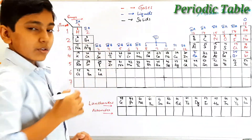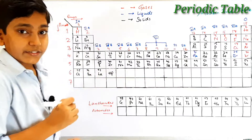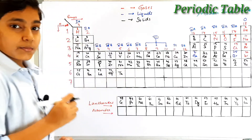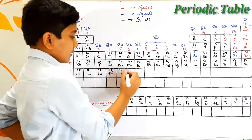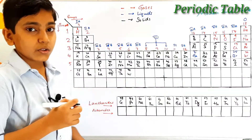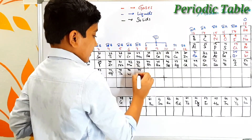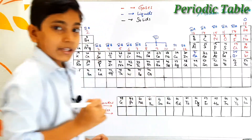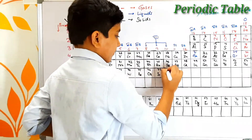Continuing in the sixth period after lutetium, we find hafnium — its symbol is Hf and its atomic number is 72. After that we find tantalum with atomic number 73, then tungsten with atomic number 74 — its symbol is W, which stands for wolfram, another name for tungsten. Atomic number 75 is rhenium — symbol Re, atomic number 76 is osmium — symbol Os, atomic number 77 is iridium, and atomic number 78 is platinum.